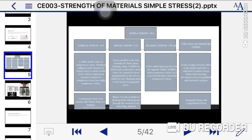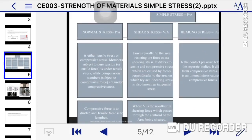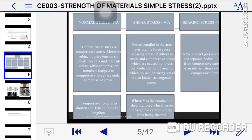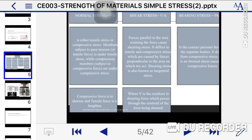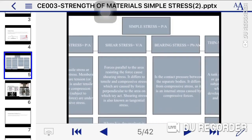Under simple stress we have four types of stresses. First is normal stress. The formula for normal stress is P divided by A. It's either tensile stress or compressive stress. Members subject to pure tension or tensile force are under tensile stress, while members subject to compressive force are under compressive stress. Compressive force shortens and tensile force lengthens.